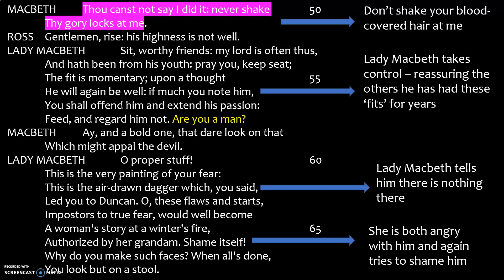Everyone else reacts — his highness is not well. Lady Macbeth has to take control, reassuring the others he's had these fits for years: 'he's always been like this, just pay no attention — you'll extend his passion, that will make him worse.' Then she says, highlighted in yellow: 'are you a man?' — again questioning his masculinity as in earlier scenes. He responds: 'I, and a bold one, that dare look on that which might appall the devil,' horrified by this vision of his murdered best friend.